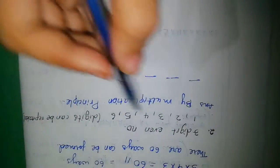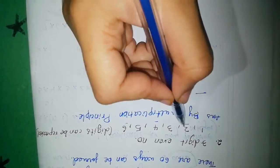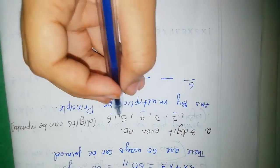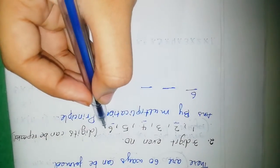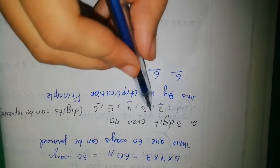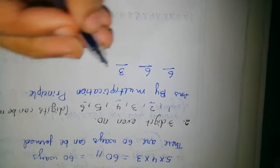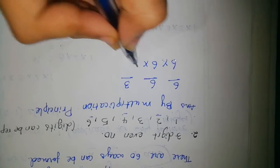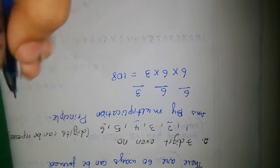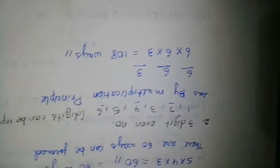For three-digit even numbers: how many even numbers are in 1 to 6? That is 2, 4, 6 — three even numbers. How many total digits? Six. For the last digit (units place), we have 3 choices (even numbers). For the other places, we have 6 choices each. Multiply: 6 × 6 × 3 = 108. So the answer is 108 ways.